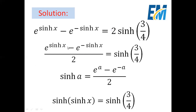In our equation, in the power we have sinh(x). So instead of a, we put sinh(x). This term becomes sinh(sinh(x)), and it equals sinh(3/4).